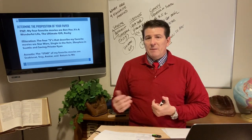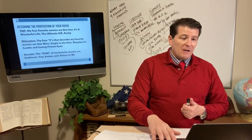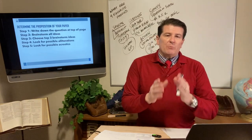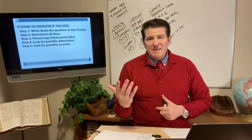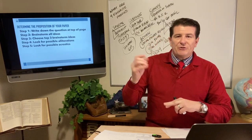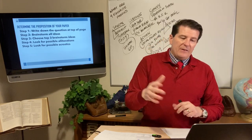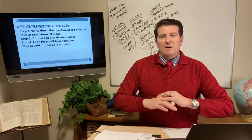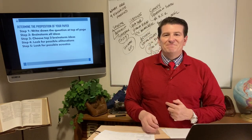So when you are determining the proposition of your Plural Noun Proposition paper, there are five easy steps: write down the question at the top, brainstorm all ideas, choose your three, four, or five main ideas, look for possible alliterations, and look for possible acrostics. If you do this, you will become a whiz at Plural Noun Proposition papers in no time. Thank you.